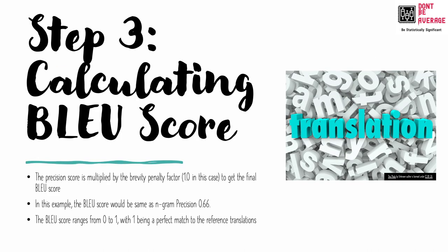Step 3 is calculating the BLEU score. The precision score calculated in step 1 is multiplied by the brevity penalty from step 2, which is 1 in our case, to get the final BLEU score. In this example, the BLEU score would be 0.66, the same as the n-gram precision. The BLEU score ranges from 0 to 1, with 1 being a perfect match to the reference translations — the higher the BLEU score, the better the translation quality.